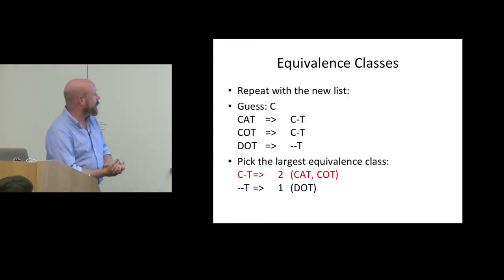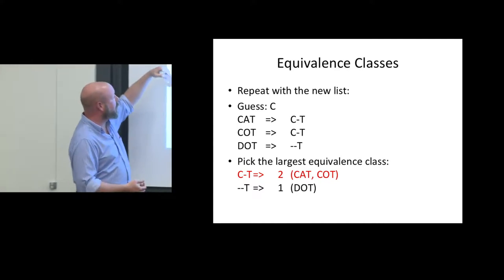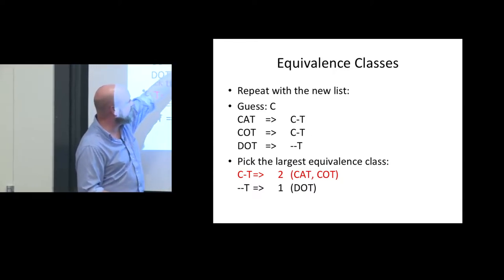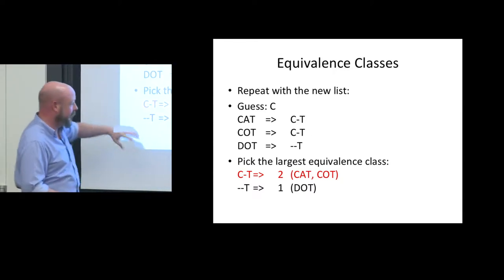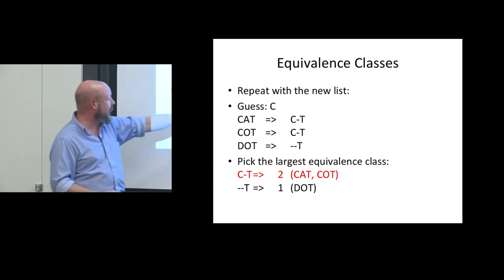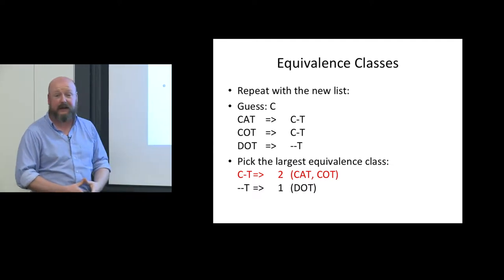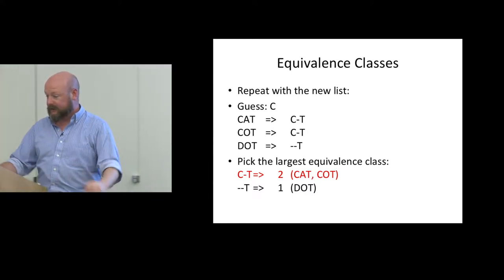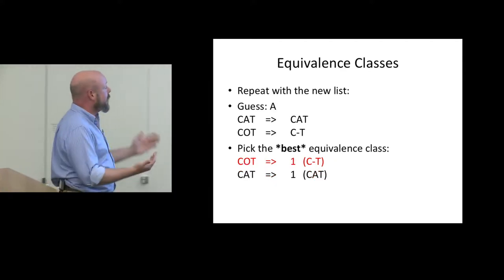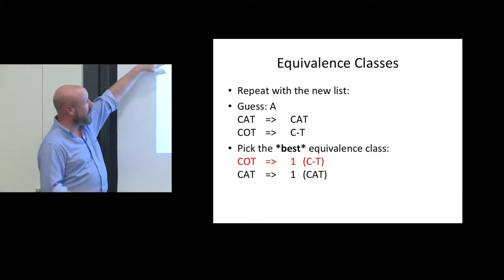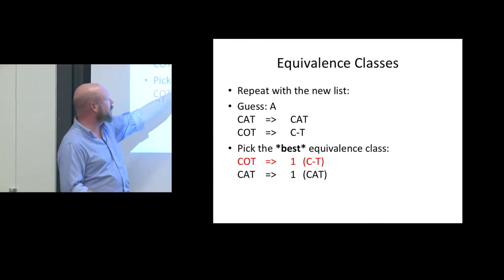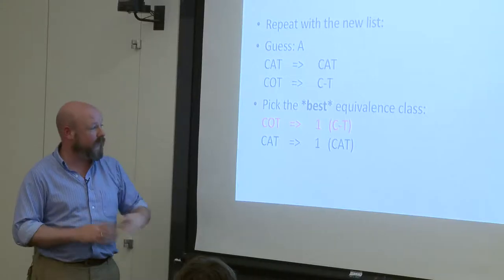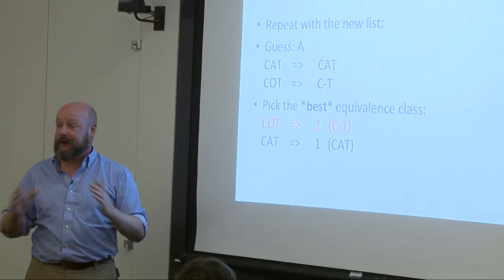We've got this new list and the person guesses the letter C. We've got these three conditions — they map out to C-dash-T or dash-dash-T. We repeat the process. We see that there are now two cases for C-dash-T and that is still our best case situation. If they guess A, we get to a special case. Each one is going to map to one condition, but we definitely want to pick the best equivalence class for us, which is cot because the user has not won.